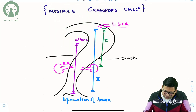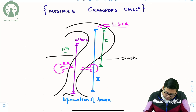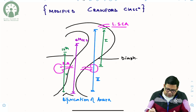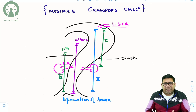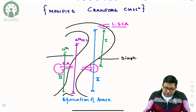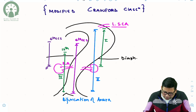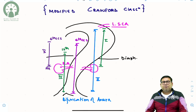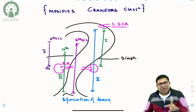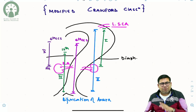Type 4 starts at the level of the 12th rib and goes right up to the level of bifurcation. The conventional Crawford had only four types, but the Modified Crawford adds a Type 5: from the level of the 6th intercostal space up to the level of the renal artery. So Types 2, 3, and 4 have the same termination, while Type 2 is the longest.